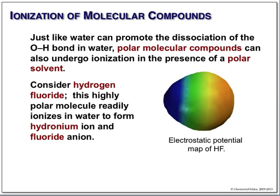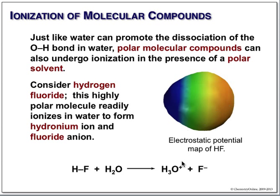Let's look at hydrogen fluoride. We've seen this electrostatic potential map before — we know that this is the positive end and this is the negative end. It's a very polar molecule. If you take hydrogen fluoride and put it in water, it undergoes ionization to give hydronium and the fluoride anion.